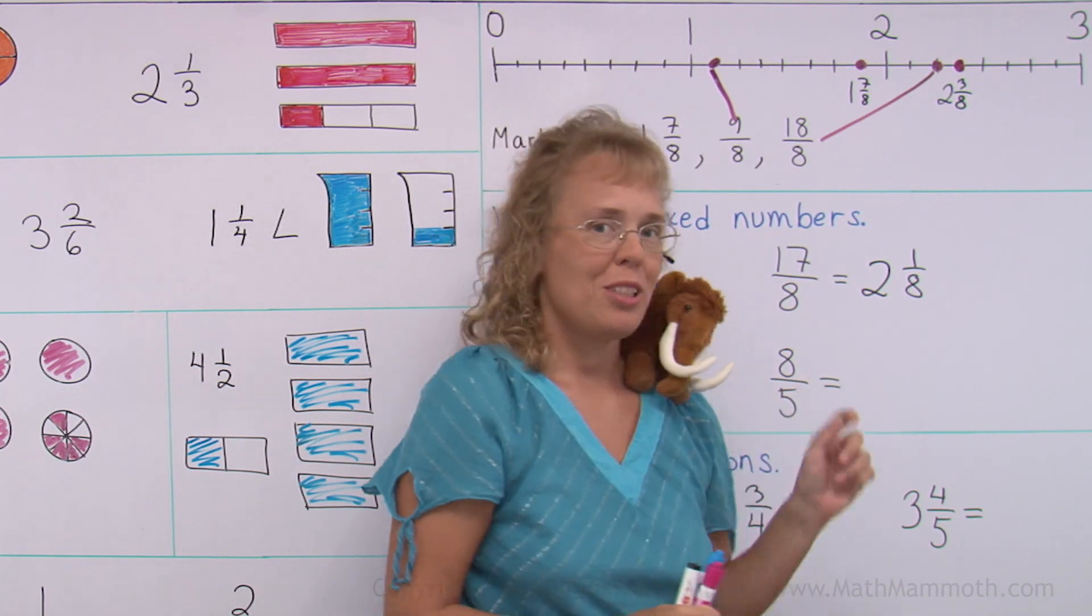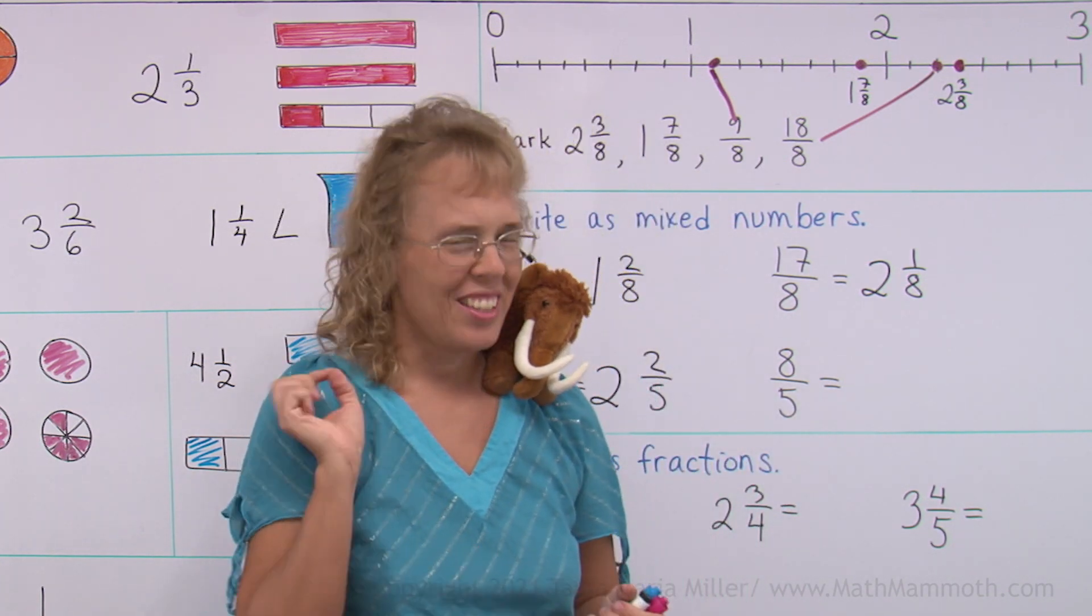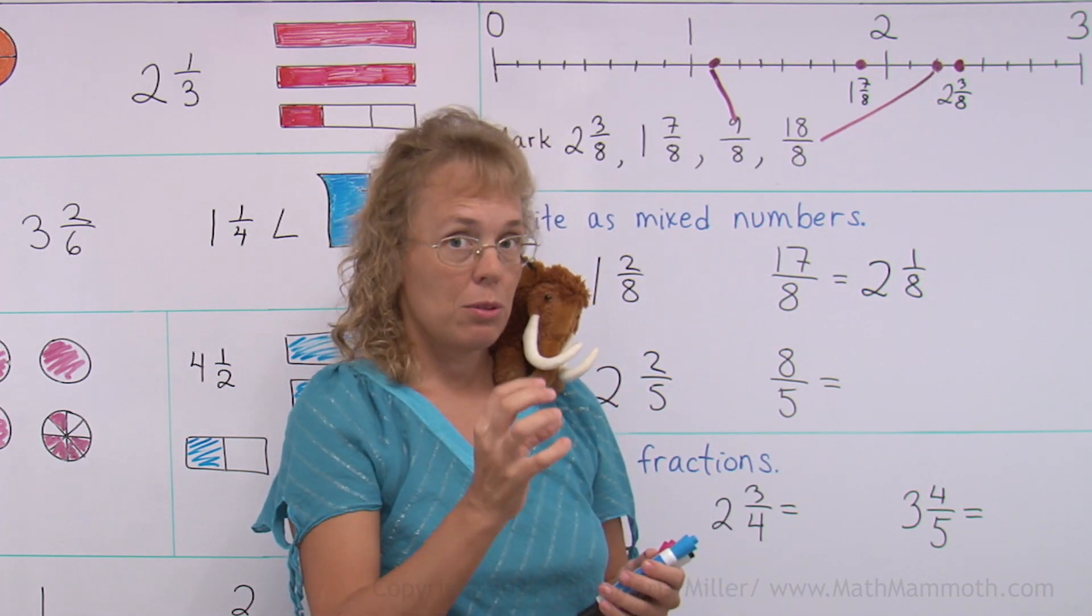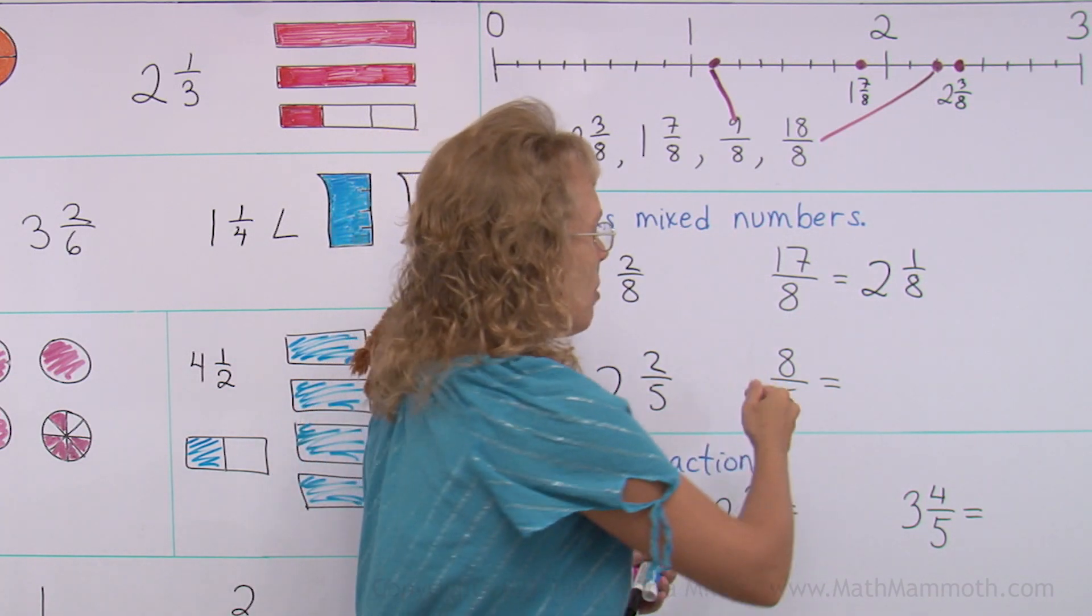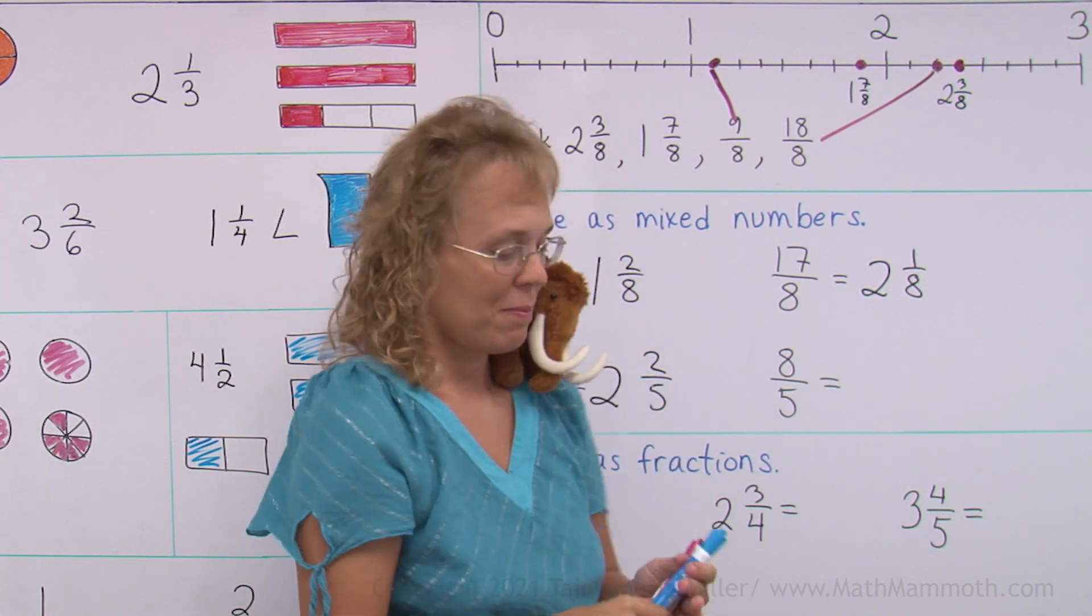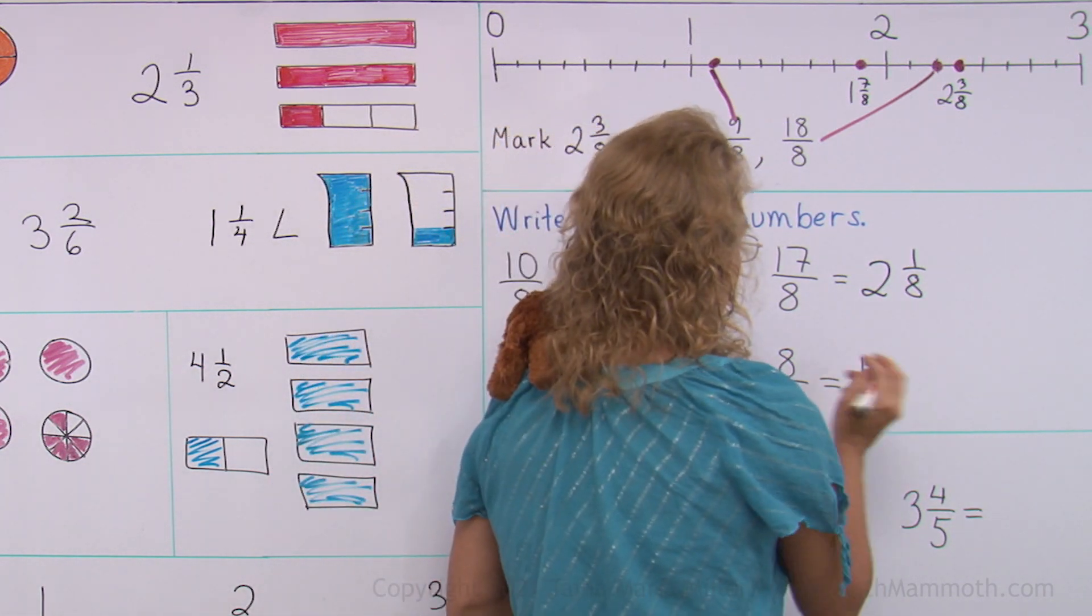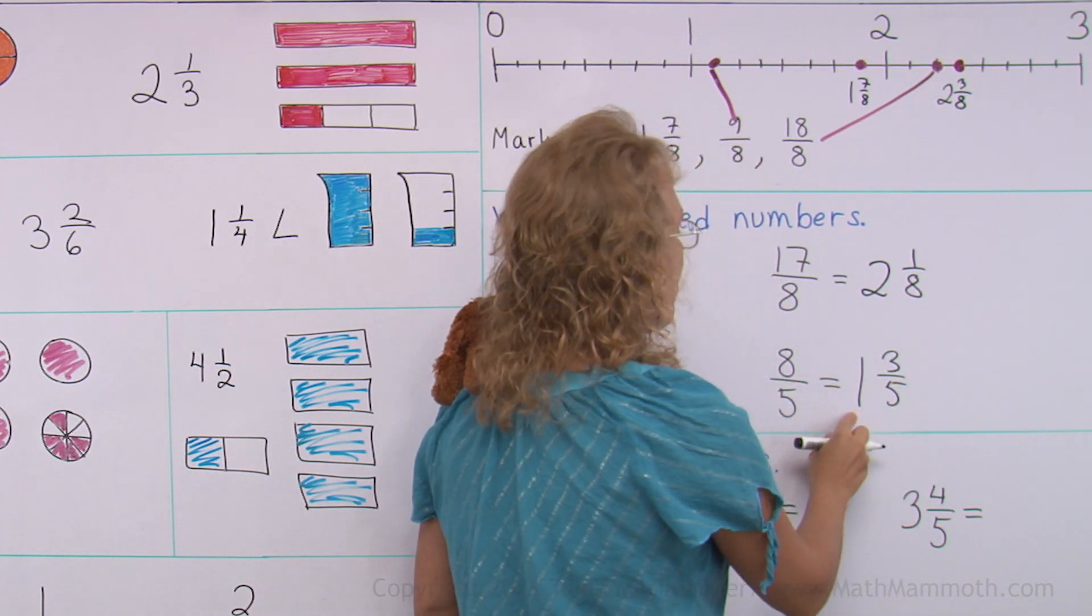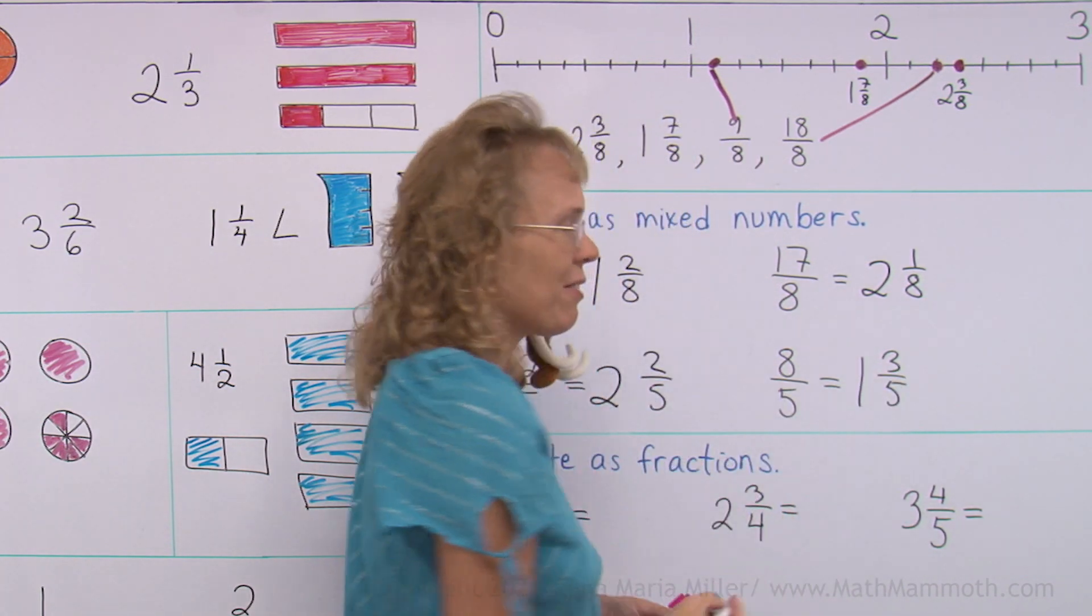The last one, I am not going to use the number line. Let's think. It is more than 5 fifths. 5 fifths is 1. So how much more is it than 1? It is exactly 3 fifths more. 5 fifths and 3 fifths would make 8 fifths.